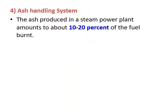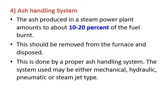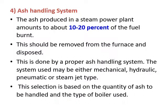The ash handling system is required because the fuel used may have 10 to 30 percent ash, depending on the type of coal. If using indigenous coal, it is around 30 percent; if it is foreign coal, it is 10 to 20 percent. The ash must be removed from the furnace and disposed of, and this is done by a proper ash handling system using mechanical, hydraulic, or pneumatic methods to operate the hoppers, with selection based on the quantity of ash to be handled.